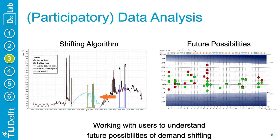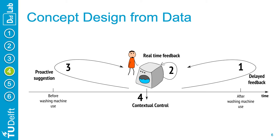This stressed opportunities for demand shifting with support of information at the right time. This led us to the conceptualization of four intervention moments around doing the laundry. We designed intervention strategies as: first, reactive — for example, information taking place after the washing machine event; and second, proactive — a recommendation, for instance, for future washing machine use.